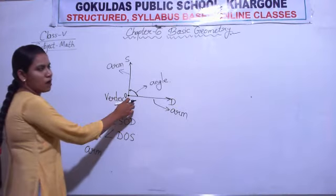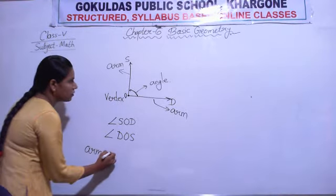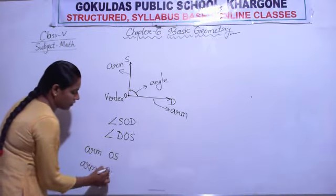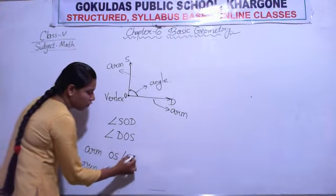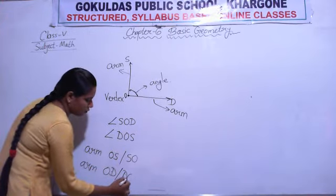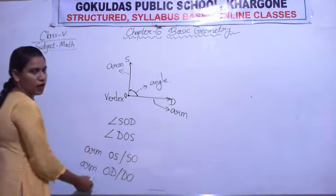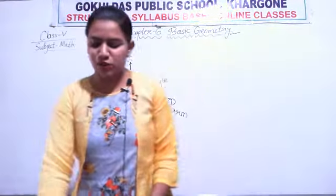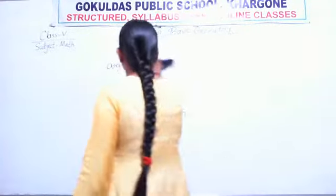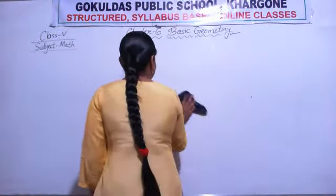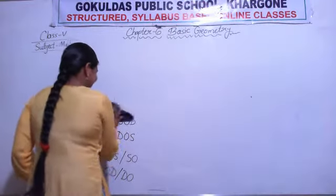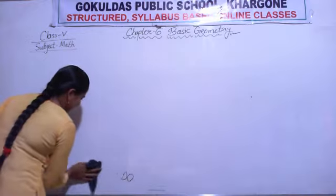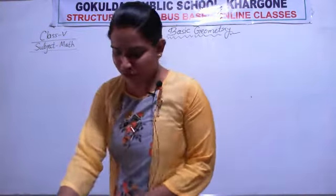In this angle there are two arms: arm O-S and arm O-D, or you can write S-O and D-O. So these were the basic terms related to angles. Now let's move on to types of angles.